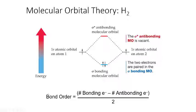An important note: the bond order must be a whole number — it needs to be one, two, or three. If the value is 1.5 or 2.5, there is no bond formed.